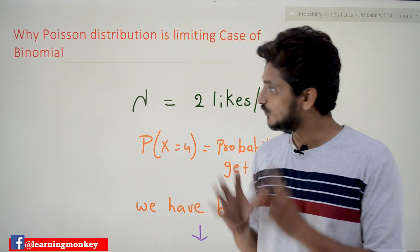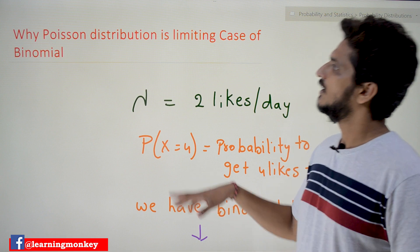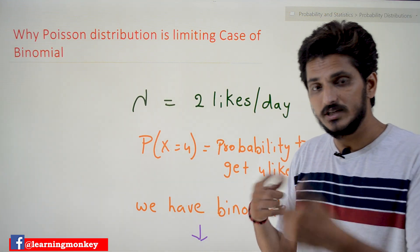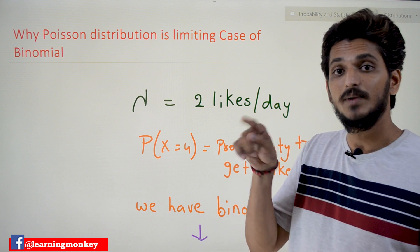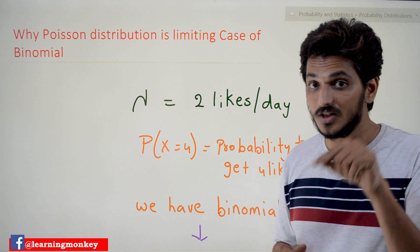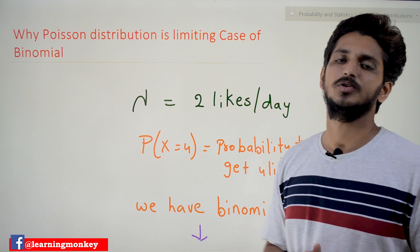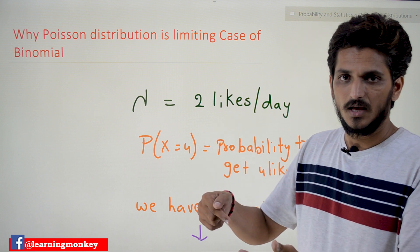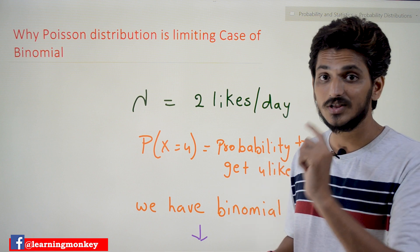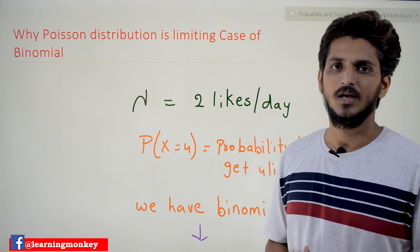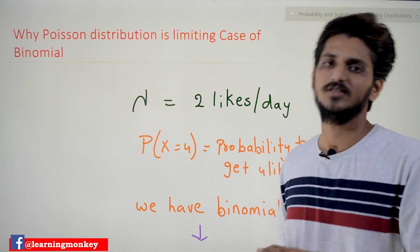Coming to today's class, it is very very important to understand — it is a bit difficult, so please concentrate. In our last class, when we were doing the derivation of binomial distribution to Poisson's distribution, we assumed that the limit n tends to infinite. Based on that, we derived the equation of the probability mass function of Poisson's distribution. There we assumed that n tends to infinite and p tends to 0, and based on that assumption we did the derivation.